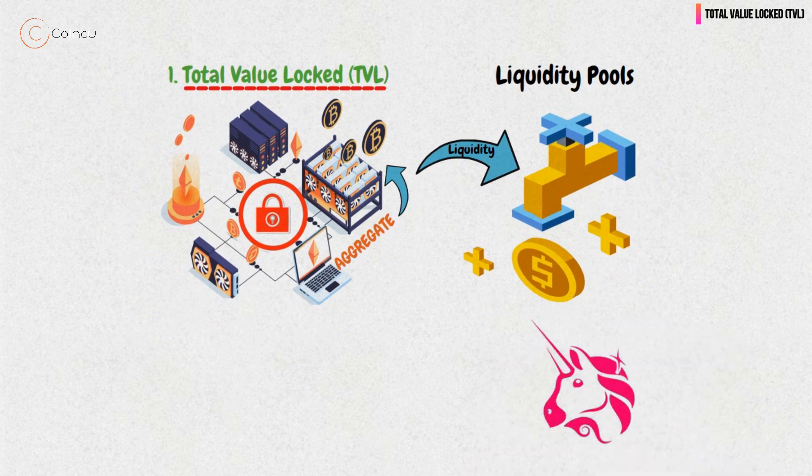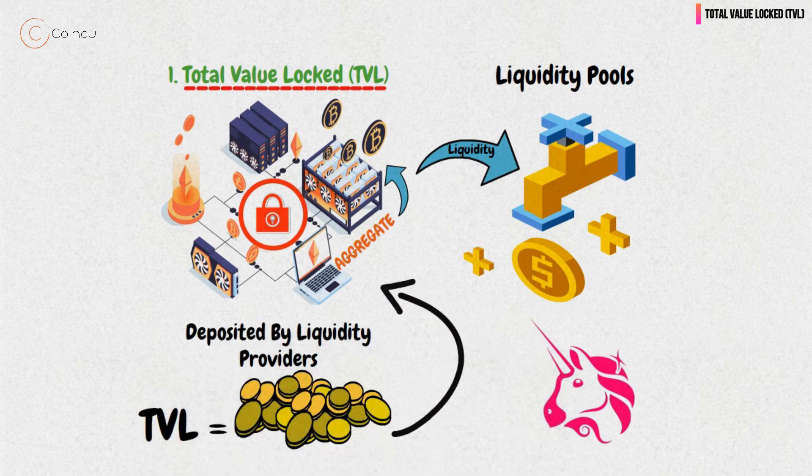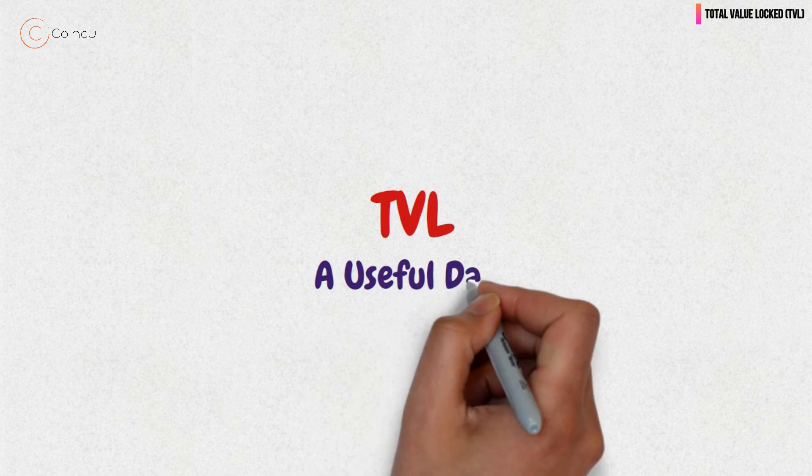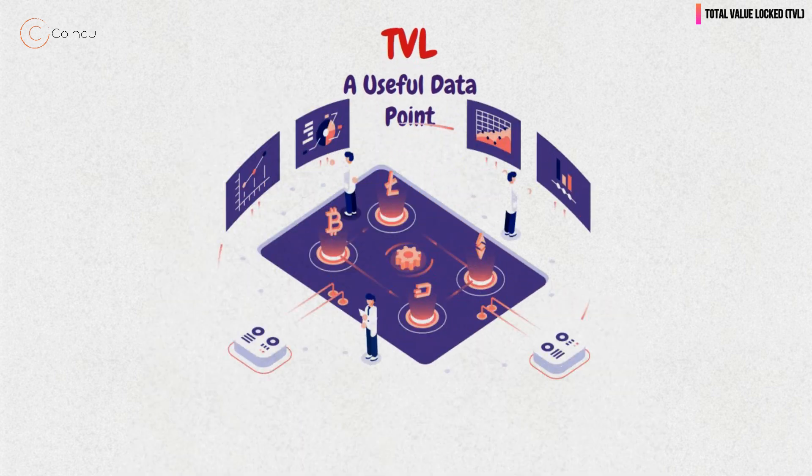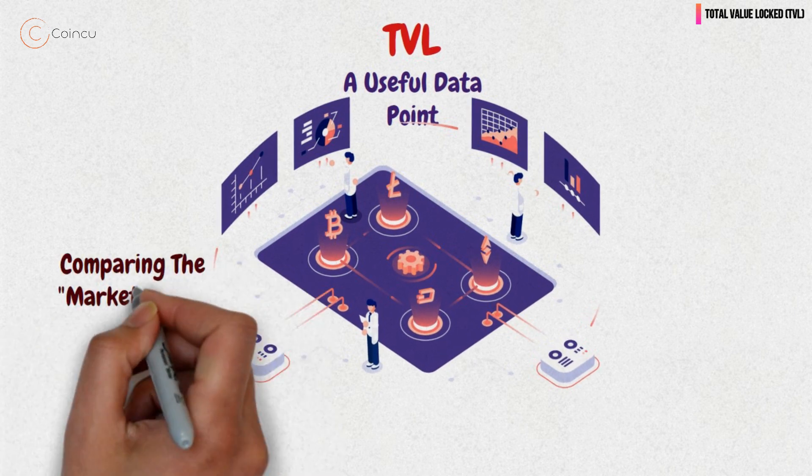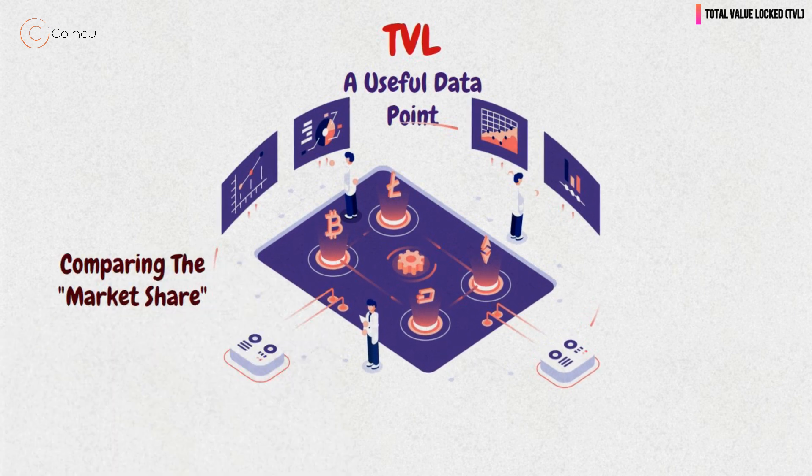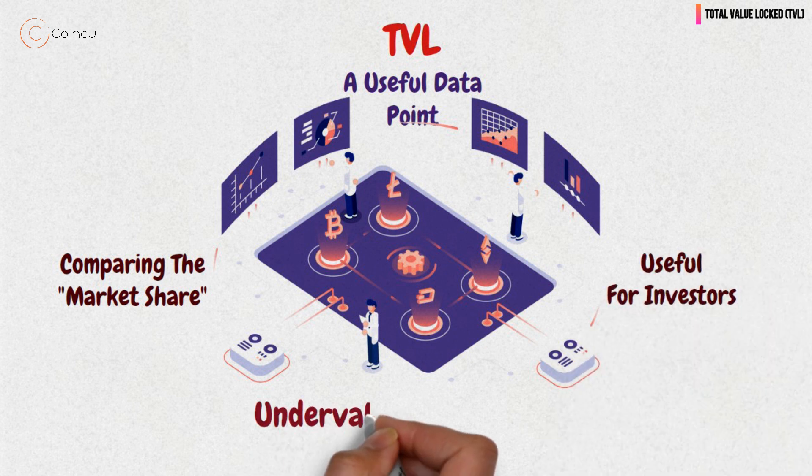For example, in Uniswap's case, TVL means the amount of funds deposited by liquidity providers to the protocol. TVL can be a useful data point that gives you an idea about the overall interest in DeFi. TVL can also be effective in comparing the market share of different DeFi protocols. This can be especially useful for investors who are looking for undervalued DeFi projects.